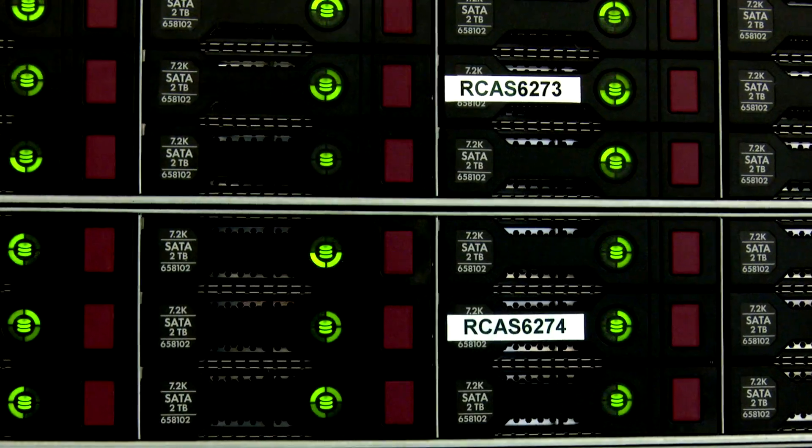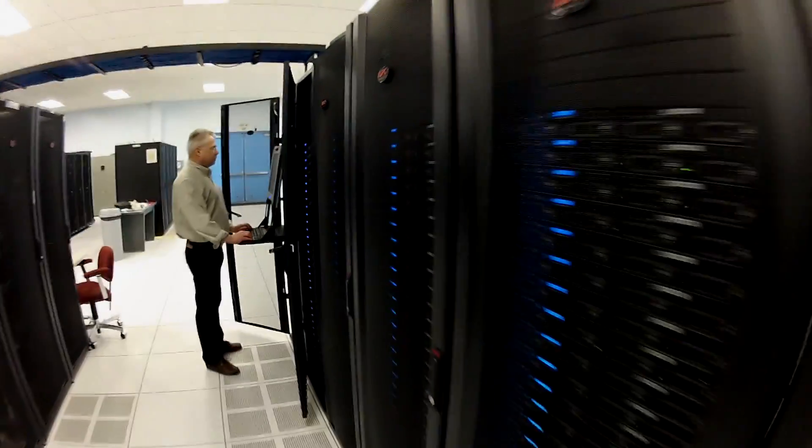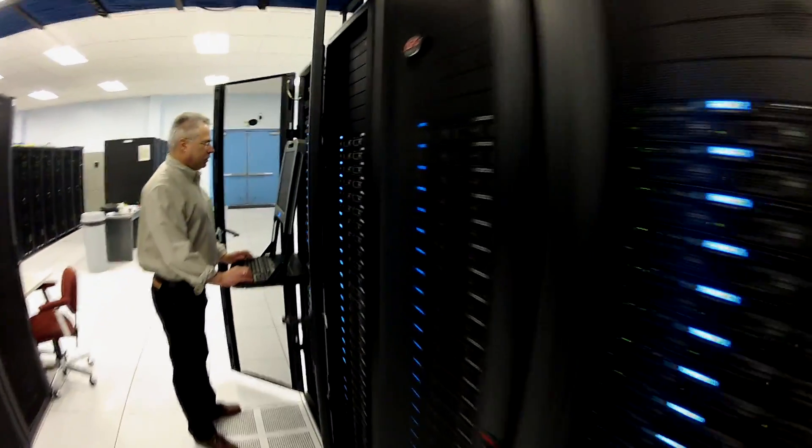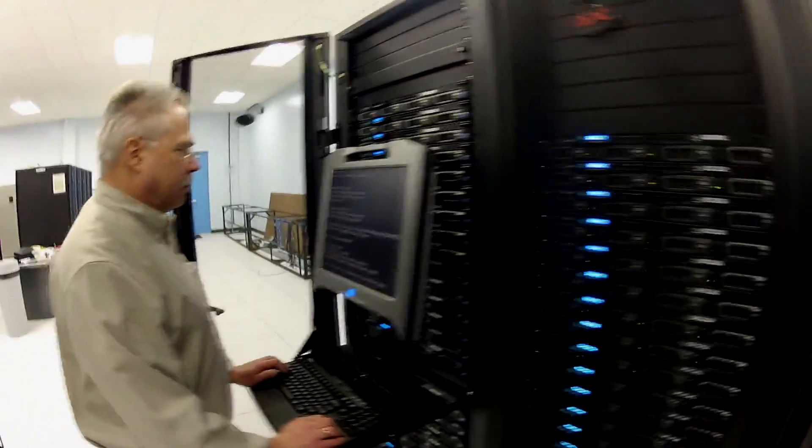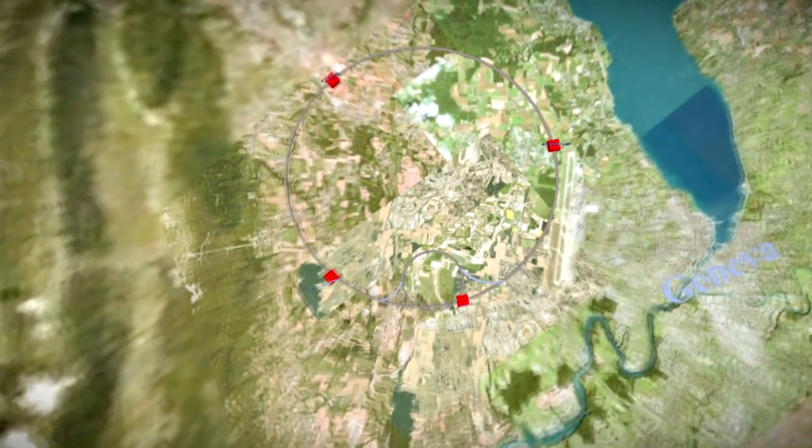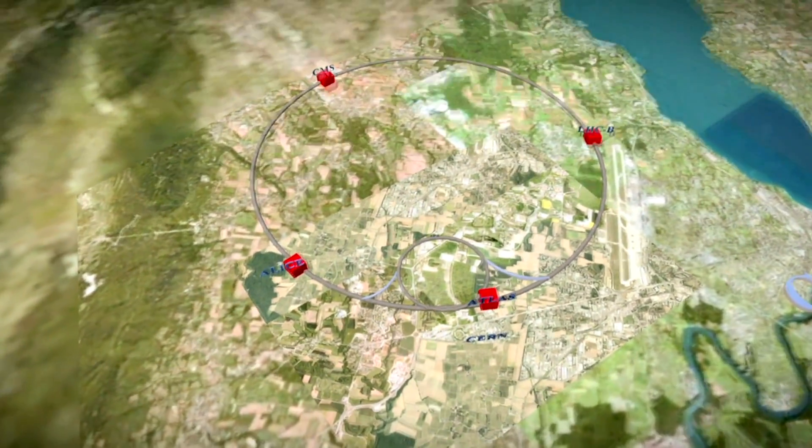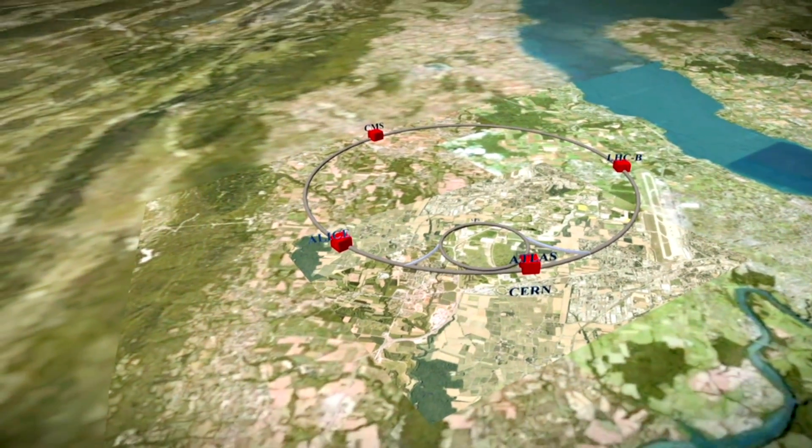At least based in part on the computing expertise and the infrastructure that had been developed here for RIC, BNL was awarded what was known as the U.S. Tier 1 facility for the ATLAS experiment that was going to be starting up at the LHC.